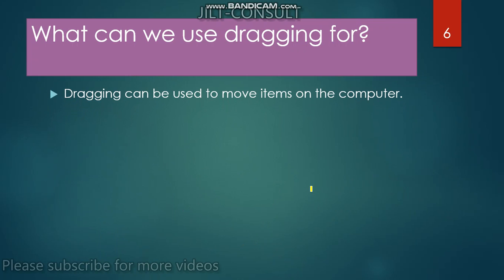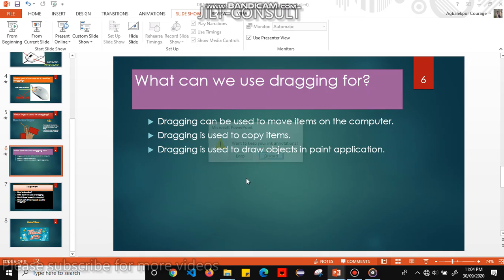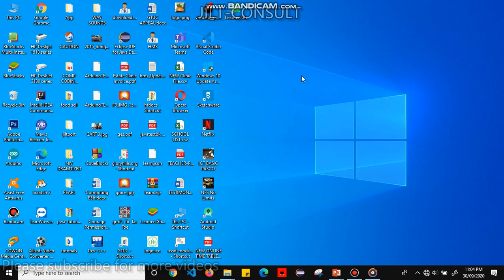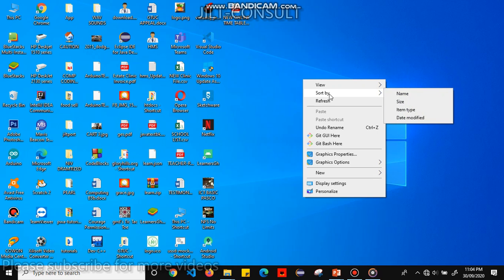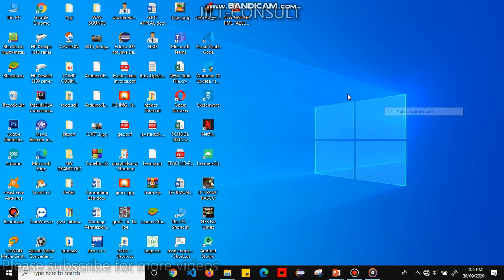Now, what can we use dragging for? Dragging can be used to move items on the computer — we can drag an item from one point to another. On the desktop, you click and drag items. I'm using dragging to move items, and I can rearrange them and put them in a new location.